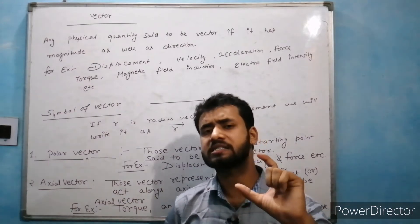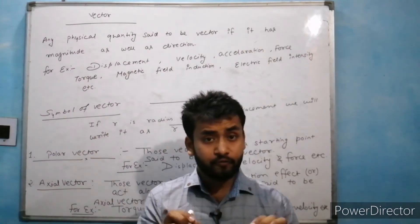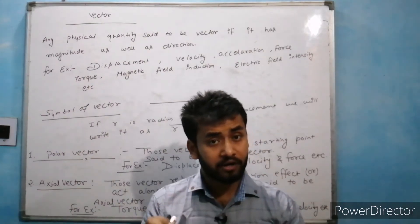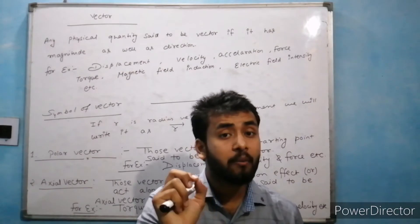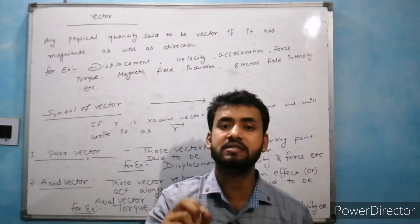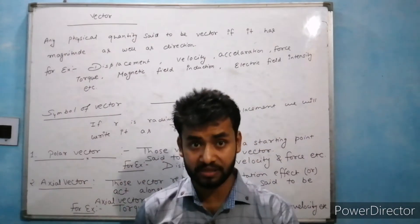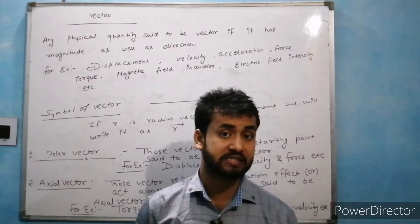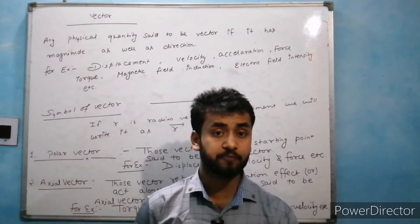What is a scalar quantity? If a physical quantity has only magnitude, then it is said to be a scalar quantity. For example: distance, time, speed.